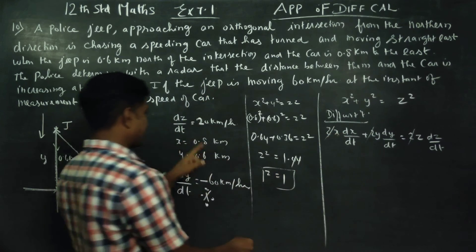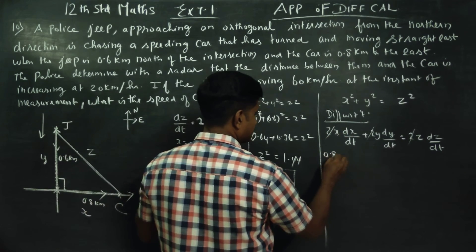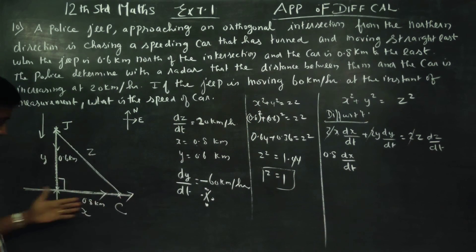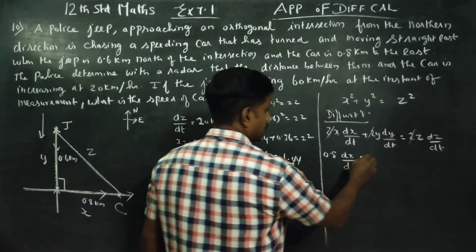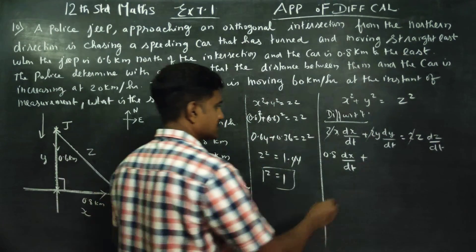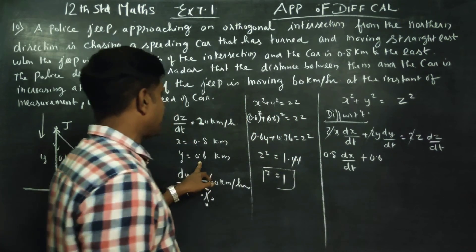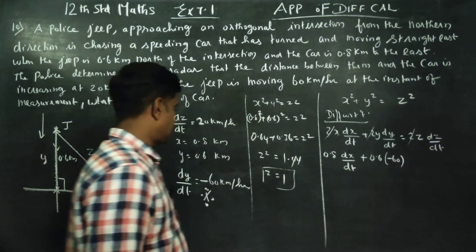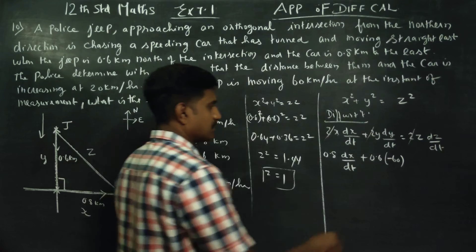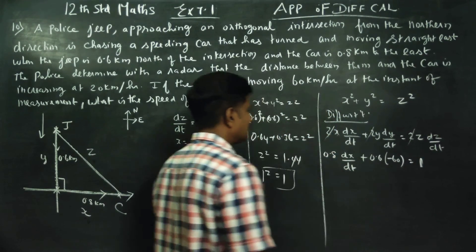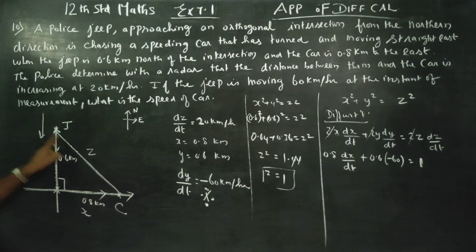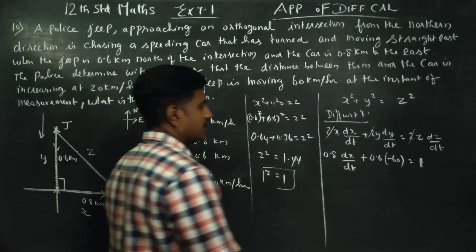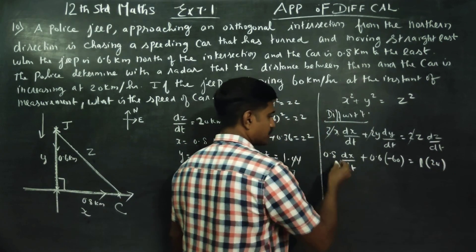Now substitute all values: x = 0.8, dx/dt is the speed of the car (unknown), y = 0.6, dy/dt = -60, z = 1, dz/dt = 20 (radar shows distance increasing at 20 km/hr). So: 0.8(dx/dt) + 0.6(-60) = 1(20).